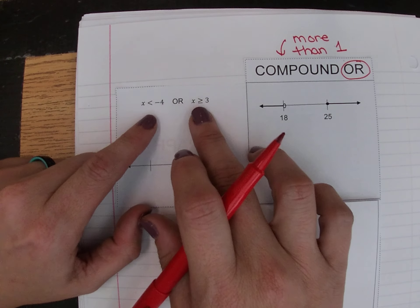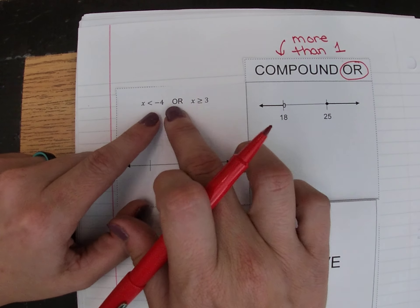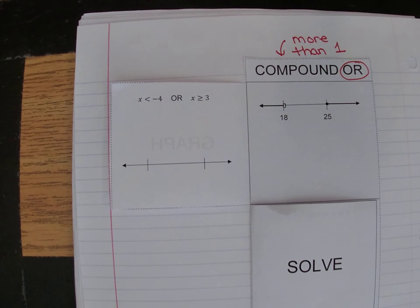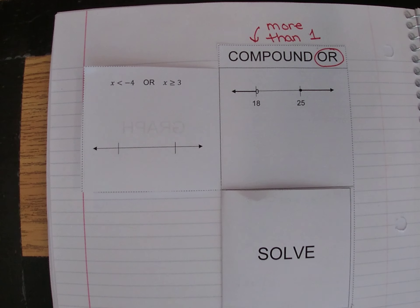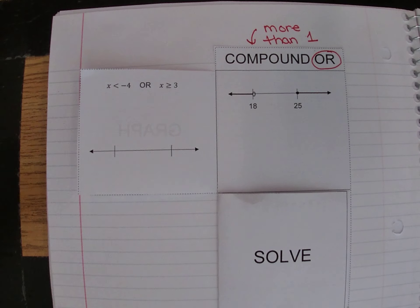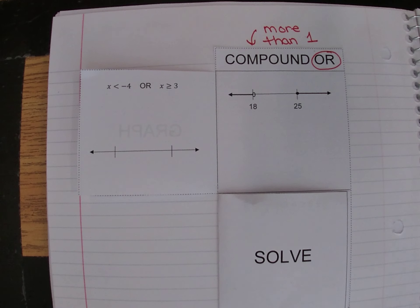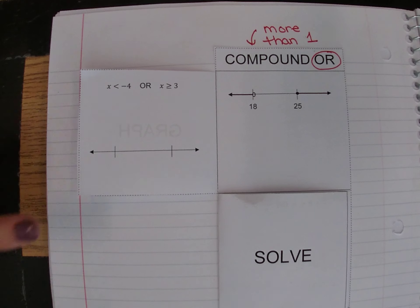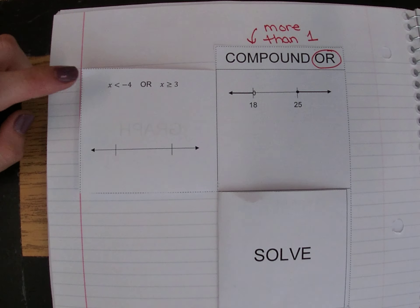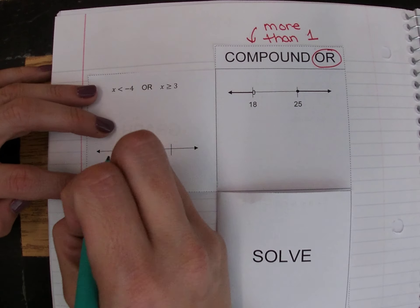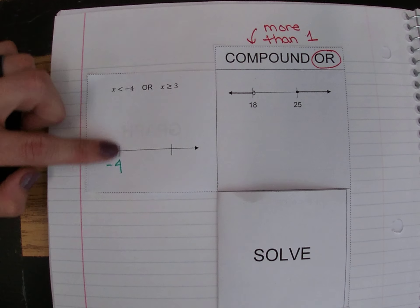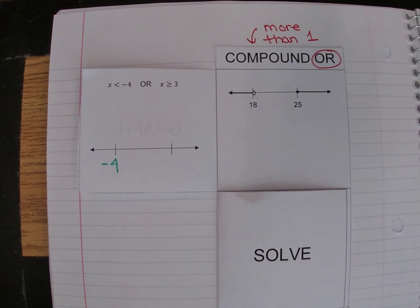If we look at this example, we have two inequalities — more than one — and they are attached with the word 'or.' That tells us two pieces of information that both pertain to the same variable. x can be less than negative four, or it can be greater than or equal to three. When graphing a compound inequality, you only need two numbers on your number line, and on the left you always put the smaller number. Negative four is smaller, so it goes on the left — it's not always the number written on the left in the inequality that goes on the left of the number line, so pay attention to that.